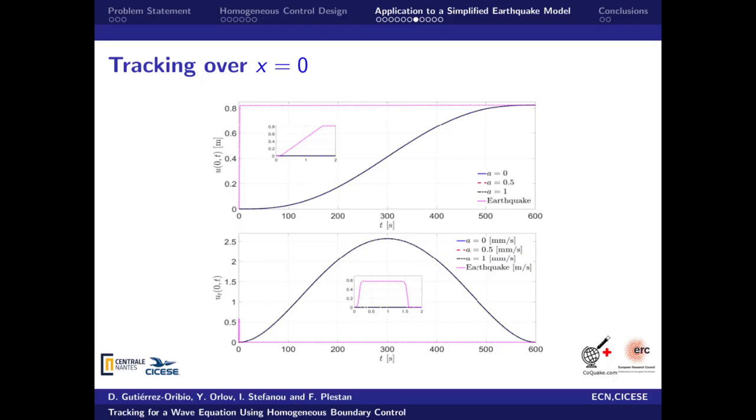These two plots show the performed tracking at x equal to zero where the fault is located. The three cases are able to reach the same displacement as the earthquake-like behavior but three orders of magnitude slower, dissipating the stored energy in a controlled manner.